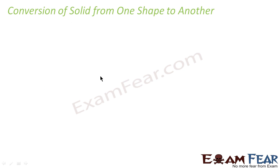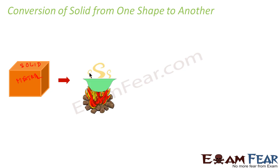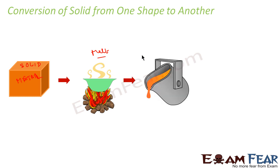Now let's take one more concept in volumes and surface area where we convert one shape to another shape. What we do in this case is we take some volume of metal — this is a solid metal. Normally it is a solid metal which we take, then we boil it and it melts and becomes liquid. In this fashion, this is a cuboid or cube — we melt it, we boil it.